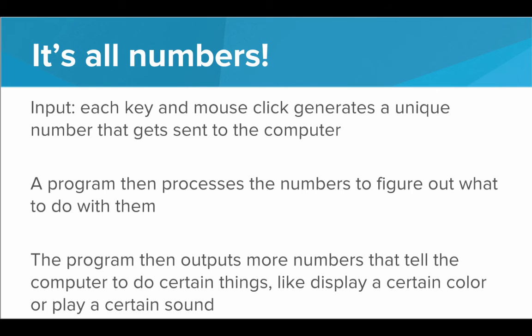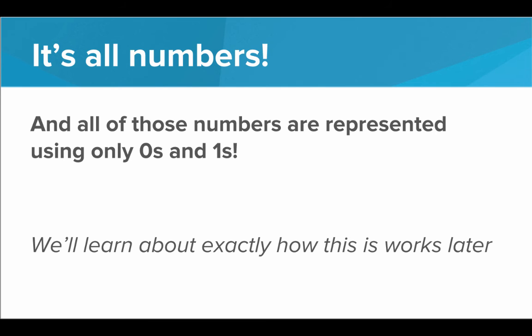So if the output is the number 28, that might mean, oh, put a blue pixel in the top left corner of the screen, things like that. And this is all represented as zeros and ones. All of these numbers are represented using only zeros and ones. And we'll get into this later about exactly how this is possible. But just know that at the base of everything, it's all zeros and ones and everything's being represented as numbers.